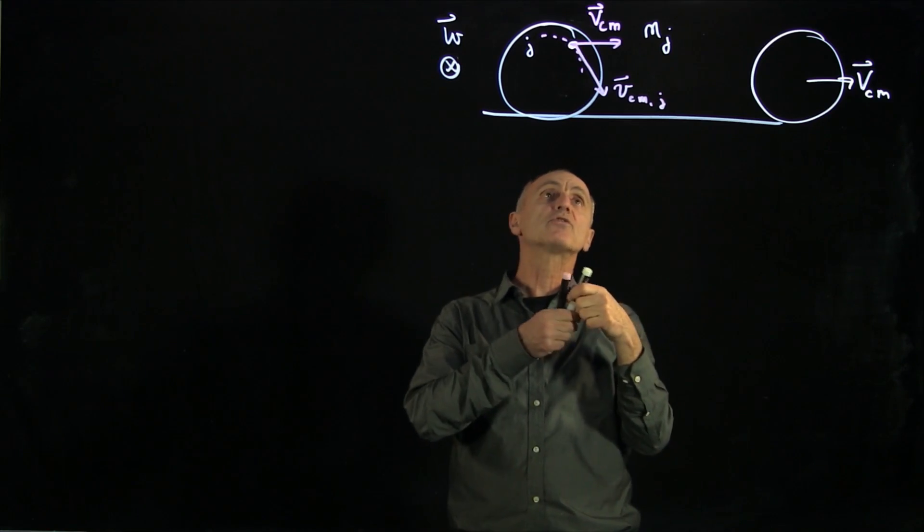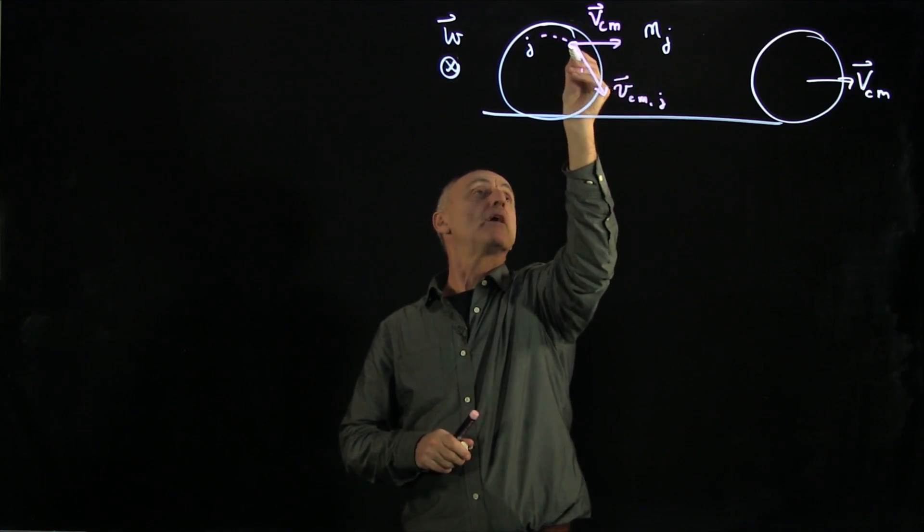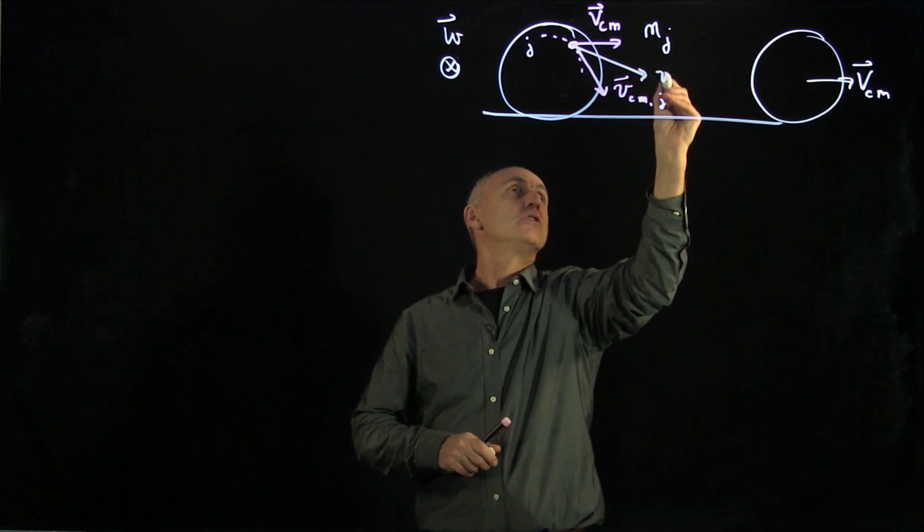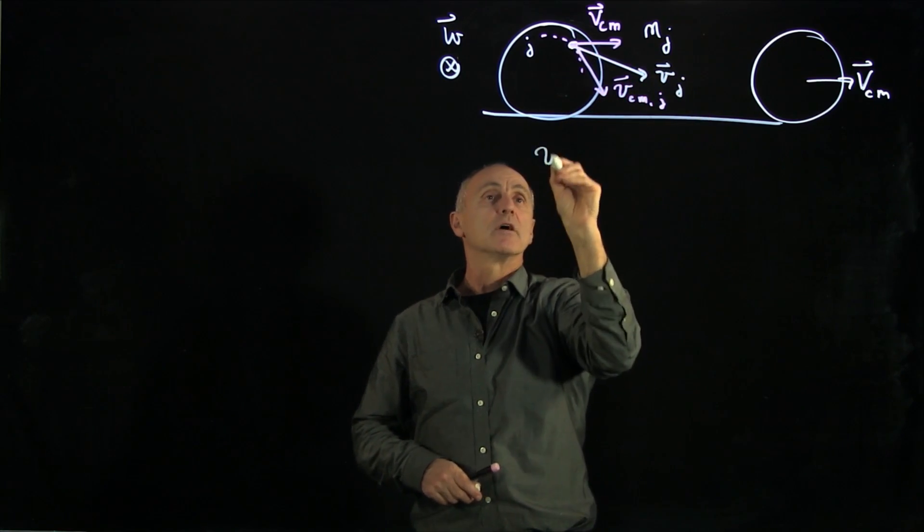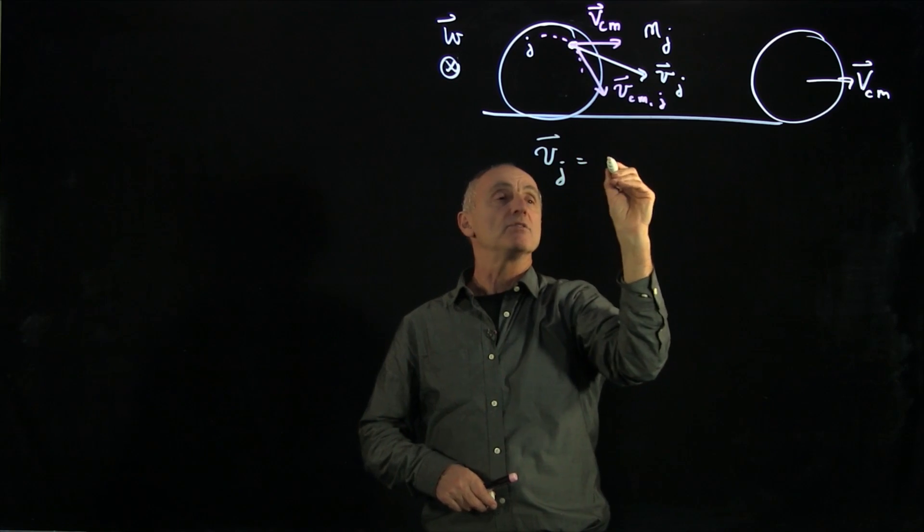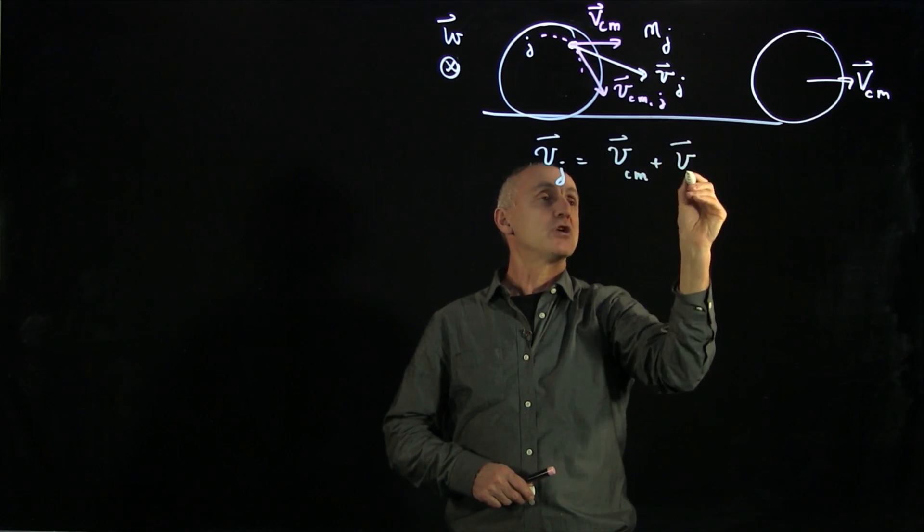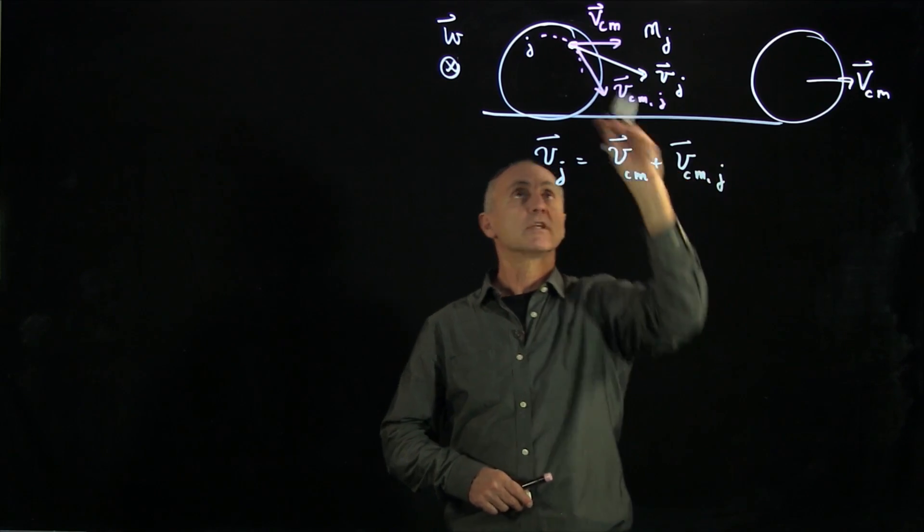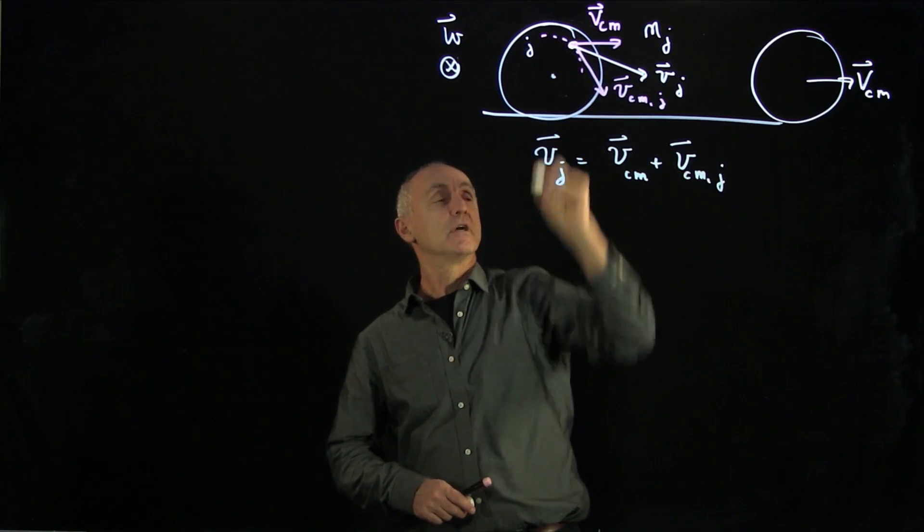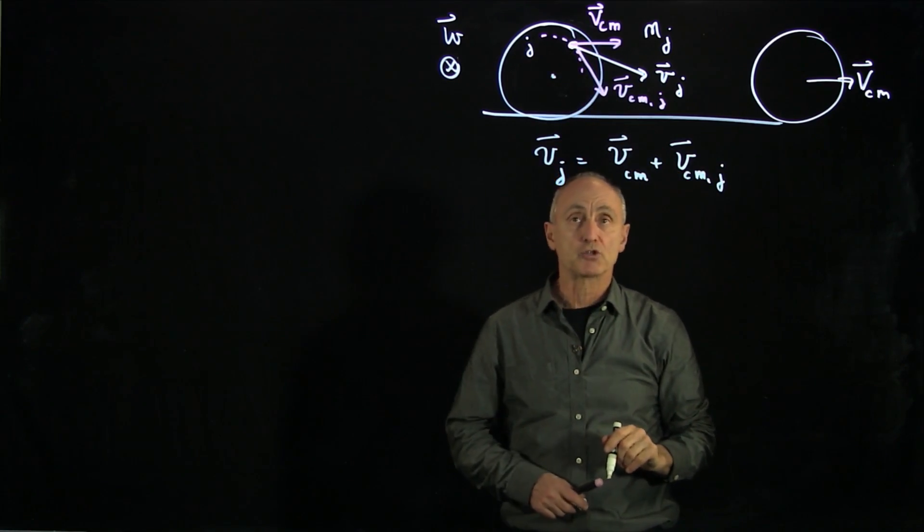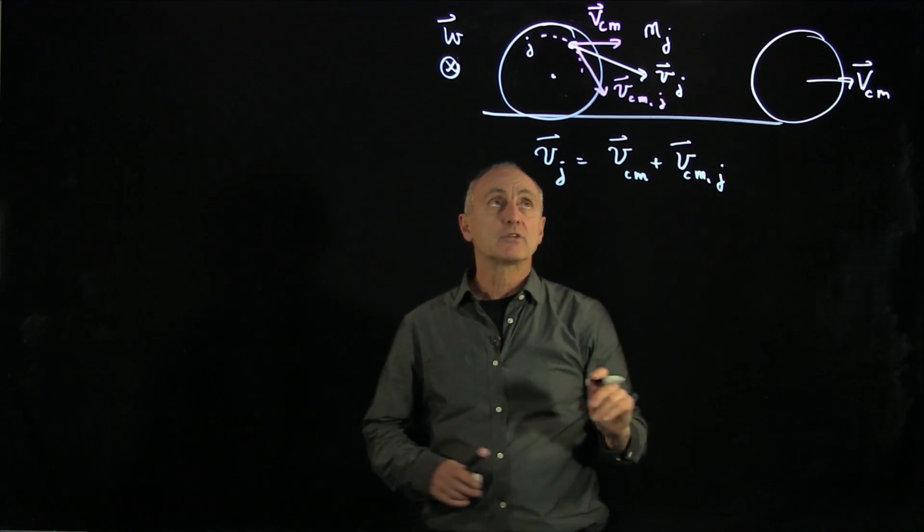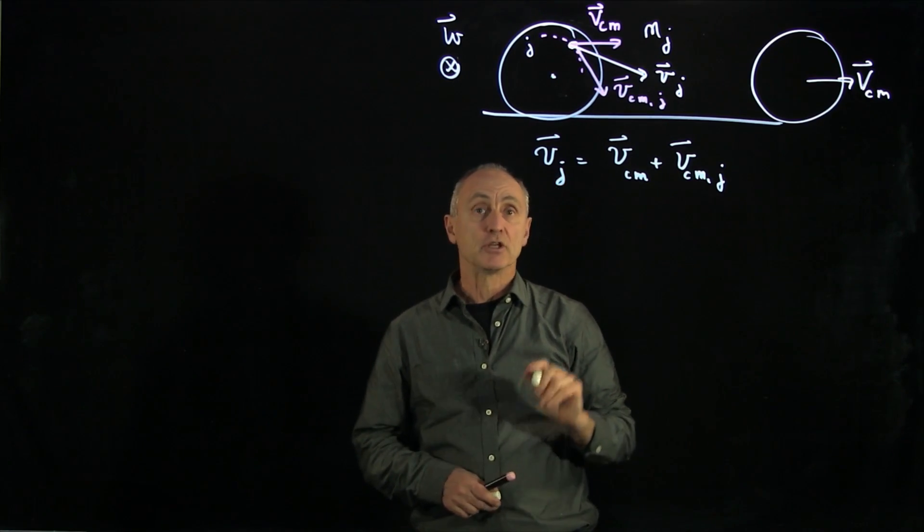And so the vector sum of these two is the actual velocity vj of the j-th object. vj is equal to the center of mass velocity plus the tangential rotational velocity that it has because it's undergoing circular motion. And now what we'd like to do is calculate the kinetic energy of this object.